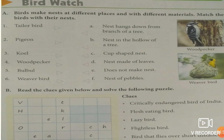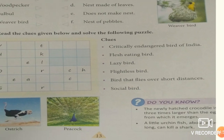Come to question B — read the clues and solve the crossword puzzle. First: critically endangered bird of India — vulture. Flesh-eating bird — hawk (H-A-W-K). Lazy bird — koel (K-O-E-L). Flightless bird — ostrich (O-S-T-R-I-C-H). Bird that flies over short distance — peacock (P-E-A-C-O-C-K).